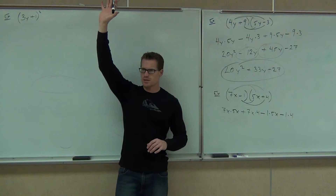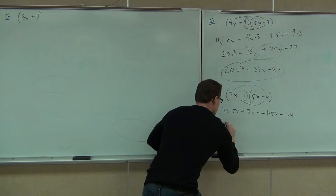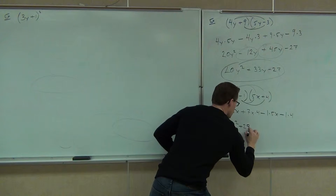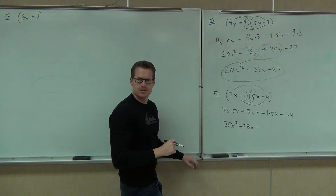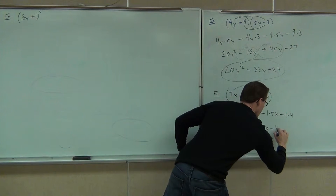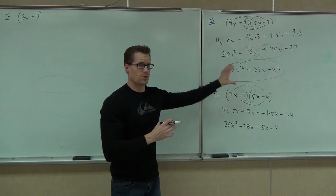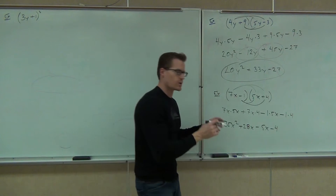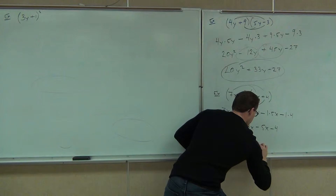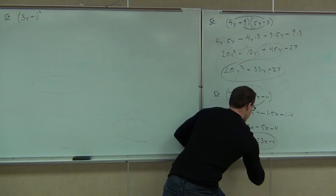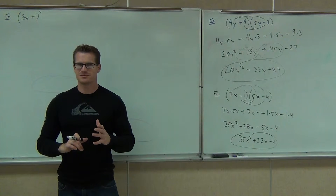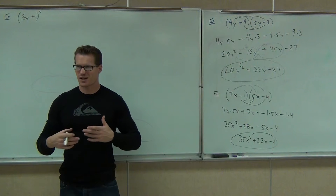On your paper you should get 7x times 5x. You should have a plus — 7x times 4, let those positives make it a plus for you. Then you should have a minus because you have a negative times a positive: 1 times 5x. And also a negative times a positive, 1 times 4. Working out step by step, we've got 35x squared, we've got a 28x, 1 times 5x. When we combine like terms we're going to have 35x squared plus 23x minus 4.